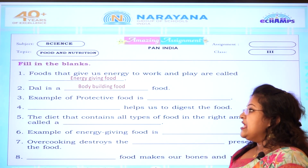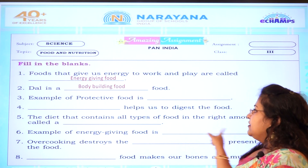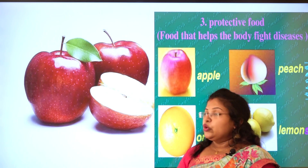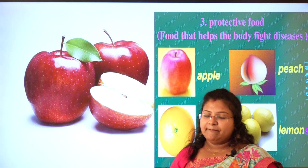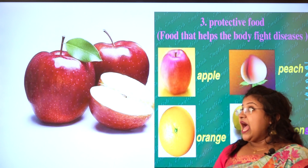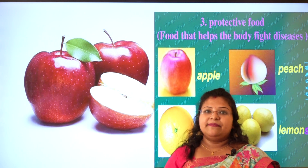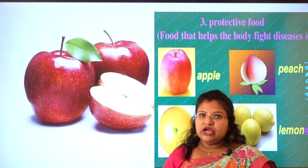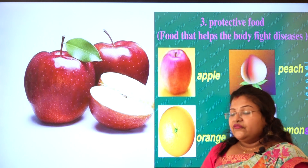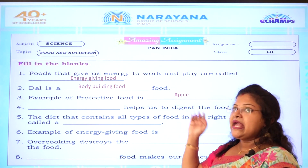Third one: example of a protective food is dash. Here is the picture of a protective food — you all know this is which fruit? It is an apple. Why is apple a protective food? Because apple contains vitamins, and vitamins help us to protect our body organs. That is why the example of a protective food is apple.